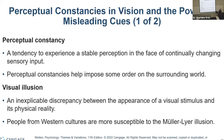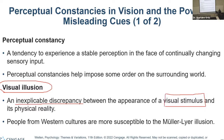We talked about the normal process through which we see things — through which we conduct sensation and perception. But sometimes we will have misleading cues. Sometimes we will be misled because of the cues we are exposed to. For instance, we may have a visual illusion — an inexplicable discrepancy where our understanding of a visual stimulus doesn't correspond to physical reality.